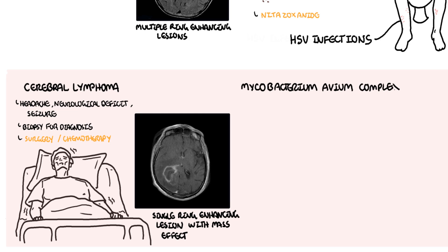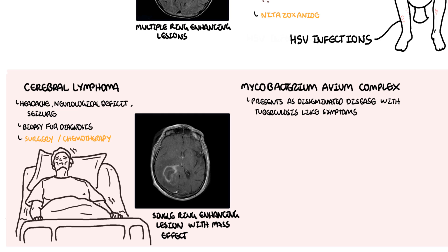Mycobacterium avium complex infection is a frequent infection in AIDS patients. It typically presents as a disseminated disease with cough, weight loss, night sweats, fever, and lymphadenopathy — very similar symptoms to mycobacterium tuberculosis. Treatment involves antimicrobials similar to those for tuberculosis. Prophylaxis using azithromycin can be used if someone has a low T cell count to prevent MAC infections.